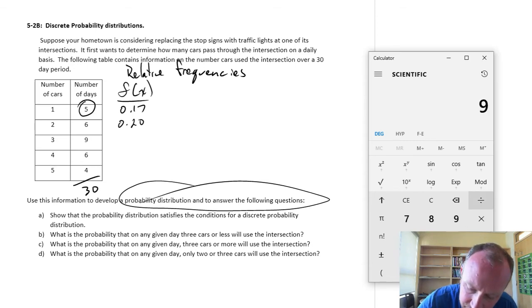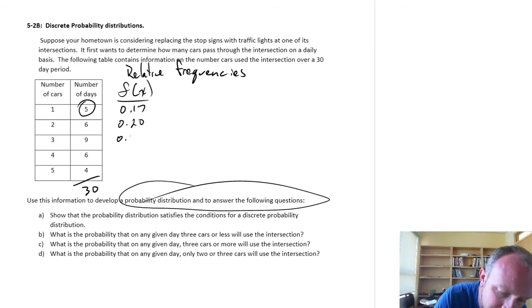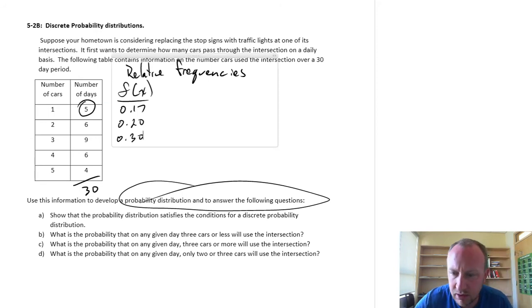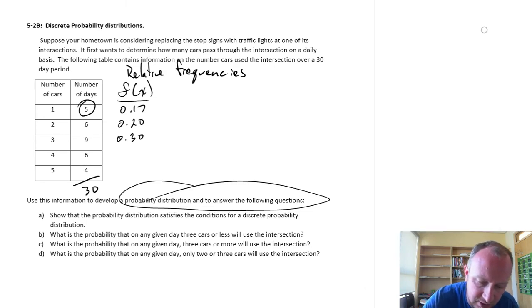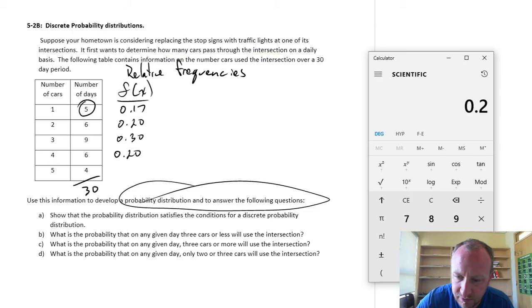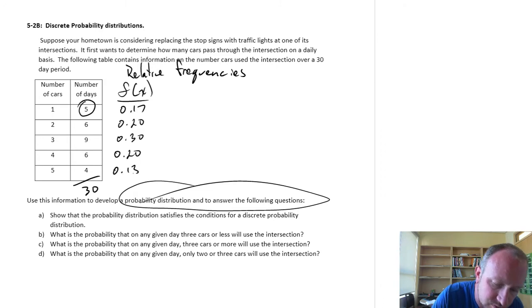So let's carry on, 9 divided by 30, this is 0.3, 6 divided by 30, 0.2 again, and finally 4, 0.13. Alright, so there we have all our frequencies.